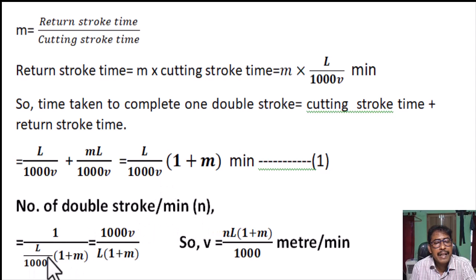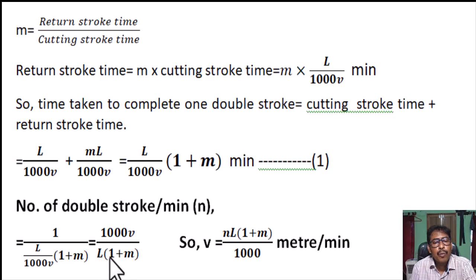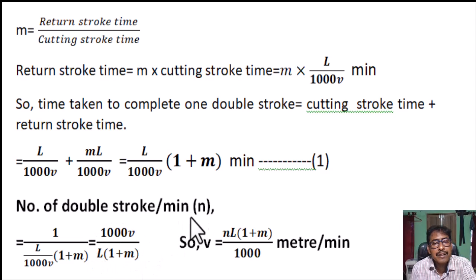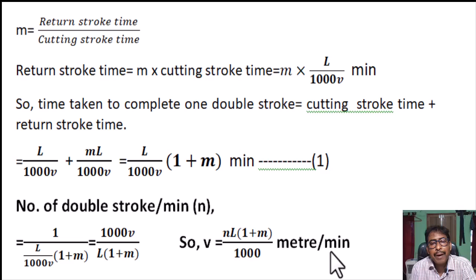Therefore, N equals 1,000 into V divided by L into one plus M. From this, V equals N into L into one plus M divided by 1,000 meters per minute. This is the cutting speed formula.